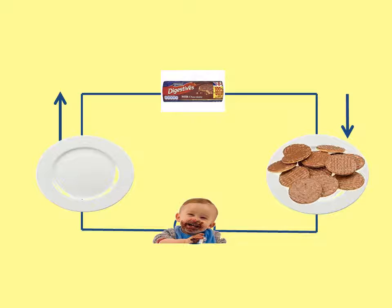The baby at the bottom is a component such as a lamp or light bulb. As the plate goes through the packet of biscuits it gains more biscuits — that relates to the electrons going through a battery and gaining energy. They then flow down the wire to the component, where they lose their energy into light. In this analogy, as the biscuits go through the baby, the baby eats them — that's the same as taking energy off the charge.